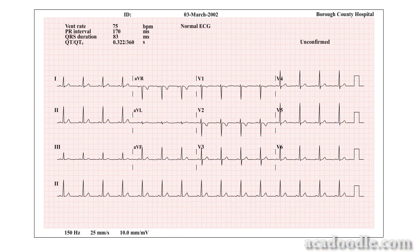Although the flow of depolarisation and repolarisation through the myocardium is a three-dimensional process, it is very important to realise that each of the leads of the ECG examines the movement of these forces through the heart in one plane only. Based on the plane in which they analyse electrical events in the heart, the twelve leads of the ECG divide into two groups of six.